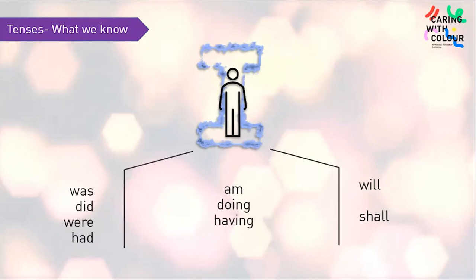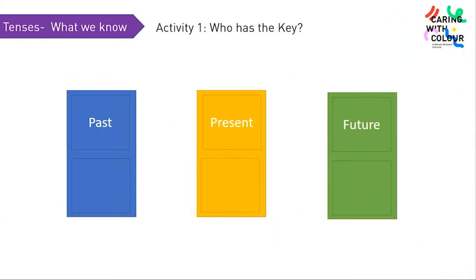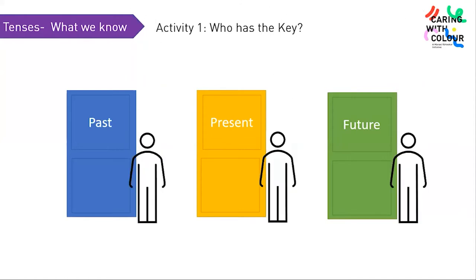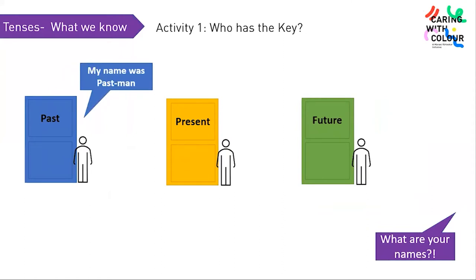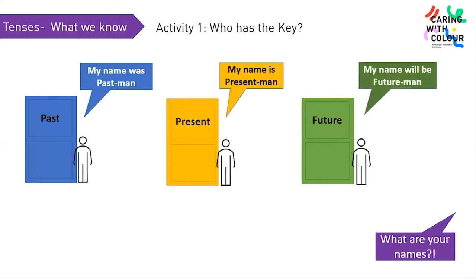Today we will be discussing lots of activities, but to get to those activities we need to open locked doors. We need the key, which is with one of the three doorkeepers. To get the key, we need to talk to them — there's something peculiar about them. Let me ask each of them: 'What is your name?' My name was Past Man. My name is Present Man. My name will be Future Man.